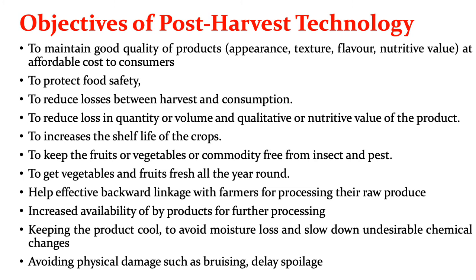It should be kept in mind that insect and pest attack should not occur during storage. Then, to get vegetables and fruits fresh all year around. As we have different geographical conditions, fruits and vegetables need to be carried from one location to another, so they should remain fresh all year around. Post harvest technology also helps in effective backward linkage with the farmer for processing their raw produce, because the quality of the final product majorly depends on the quality of the initial product.